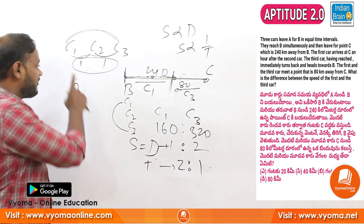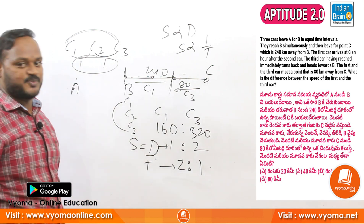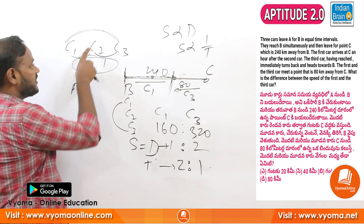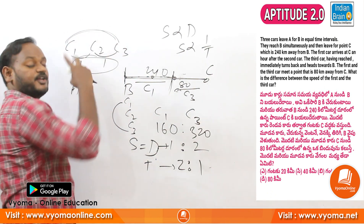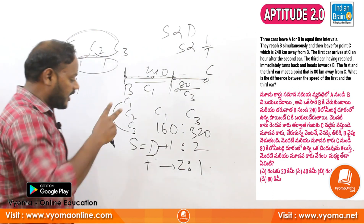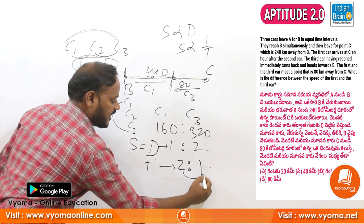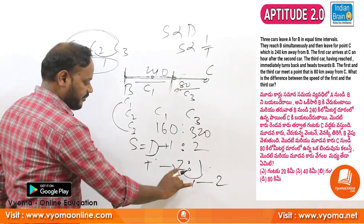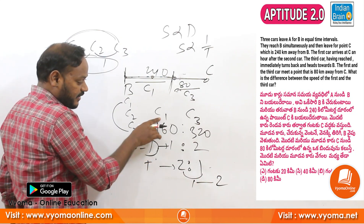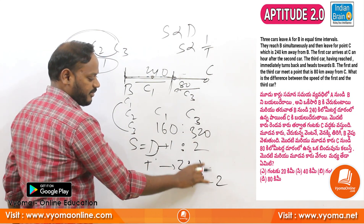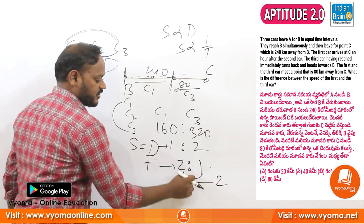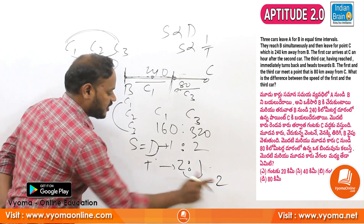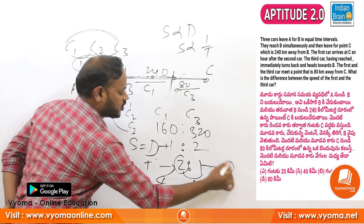C1 and C3 have a 2-hour difference. So the total time gap is 2 hours. Time ratio is 1 part to 2 parts. C3 takes 1 part and C1 takes 2 parts — that 2 parts equals 4 hours. Since 1 part equals 2 hours, 2 parts equals 4 hours. So C1 takes 4 hours for the journey.